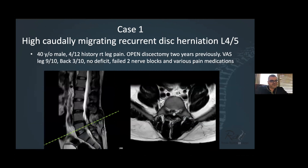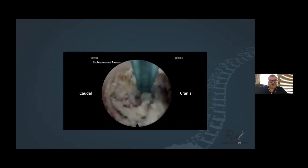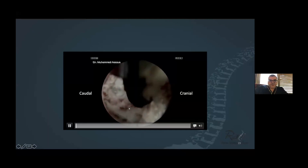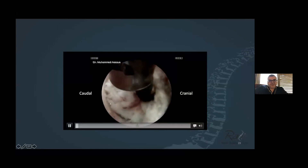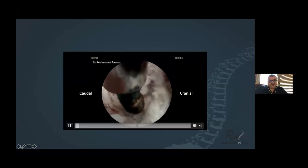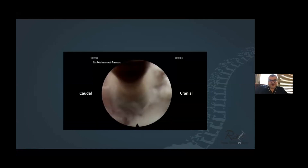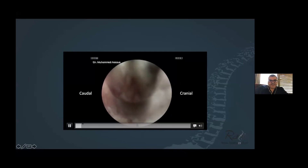To show how robust the transforaminal approach is: this is a high caudally migrating recurrent disc herniation in a young man who tried everything for four months with leg pain, nothing worked. The disc is reaching all the way to the level of the pedicle on the right side — L4-L5, caudally migrating. Same approach, nothing has changed. You can drill three to four millimeters of the caudal pedicle to give more access to go caudally with the flexible forceps.